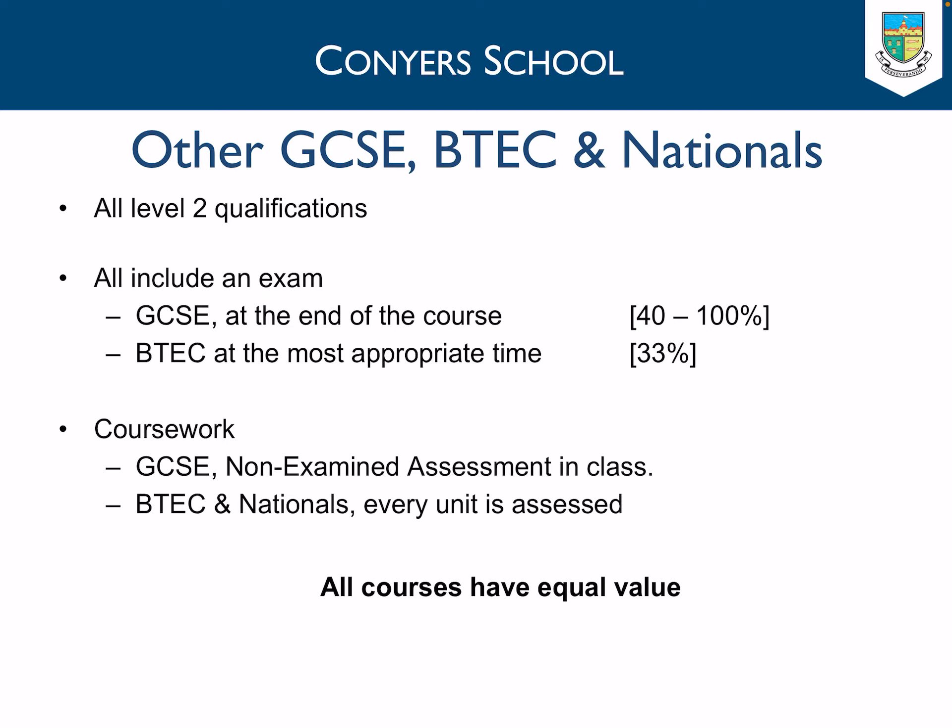All courses studied as options choices and as the core curriculum are Level 2 qualifications, and every subject includes an exam. GCSE qualifications are linear courses and exams are at the end of the course, typically worth between 40 to 100%. With BTEC qualifications, exams are taken at the most appropriate time in the course and make up a third of the qualification. For GCSE qualifications, non-examined assessments are carried out in school in class time. For BTEC and Nationals qualifications, every unit is assessed through coursework. All courses — whether GCSE, BTEC, or Nationals — are of equal value, and that's really important to note.